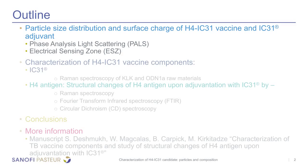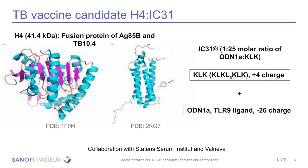The TB vaccine candidate H4 IC31 has two different constituents. H4 is a fusion protein of AG85B and TB10.4 — both proteins have predominantly alpha helical content, and AG85B also has some beta sheet content visible in magenta. The other component is IC31, an immunostimulant synthetic adjuvant. It comprises KLK, an antimicrobial leucine-rich polypeptide, and ODN1A, a TLR9 ligand oligonucleotide.